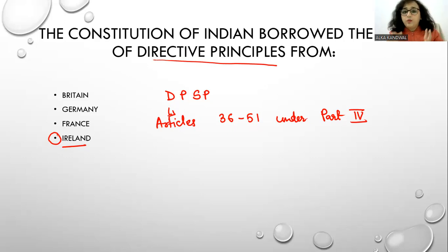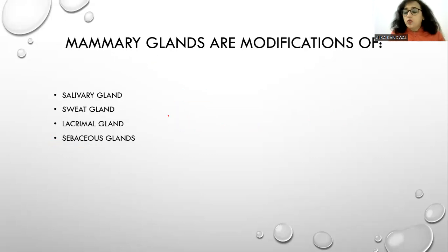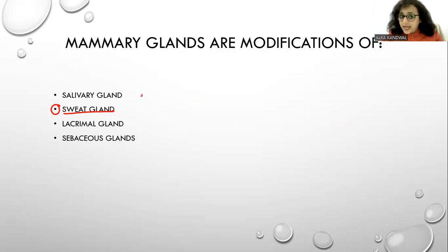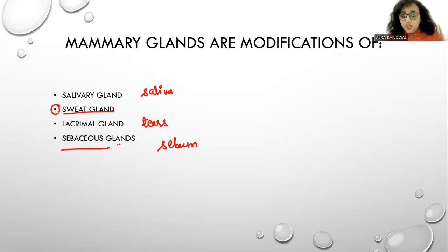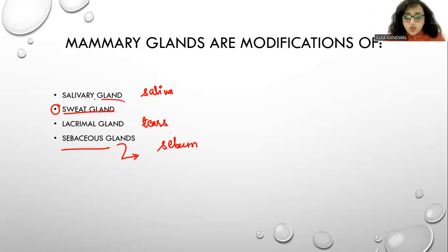The constitution of India borrowed the idea of Directive Principles of State Policy. Regarding memory glands: what are they? They are the modification of the sweat glands. Option B: the salivary gland deals with the production of saliva. Lacrimal glands deal with tears. Sebaceous glands produce sebum for hair follicles, maintaining oil in the hair follicles. So memory glands are the modification of sweat glands only.